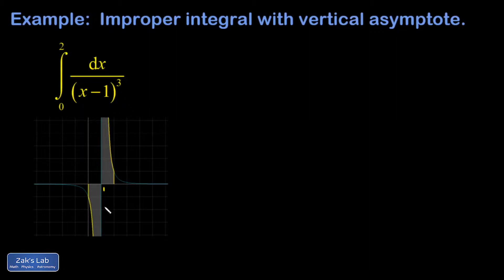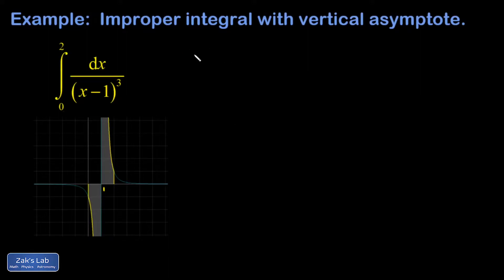At first glance, I saw this function and thought: it's something that dives to negative infinity on one side and positive infinity on the other. Then I realized the interval of integration is symmetric to the left and right of that asymptote — so shouldn't this give me a value of zero?